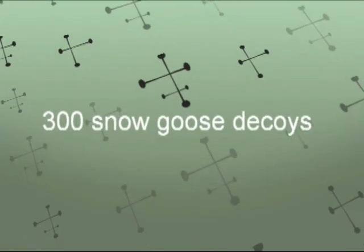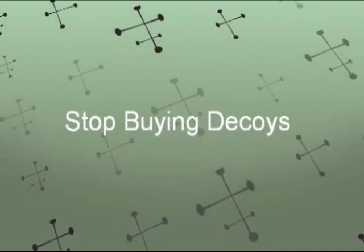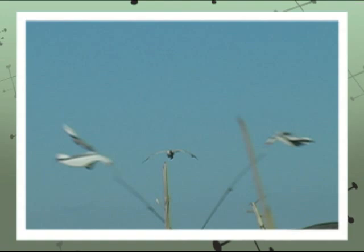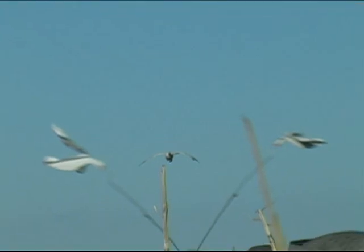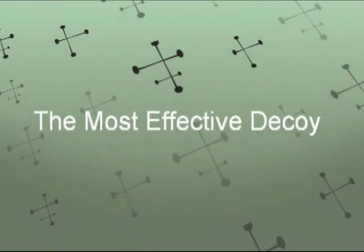I always tell people if you've got at least 300 decoys, stop buying stationary decoys whether they be windsocks and flow bodies, and start adding at least one of these rotary machines, if not more than one. Plus, along with some flyers, you will just absolutely start killing more geese. It's been by far the most effective decoy I've ever used.